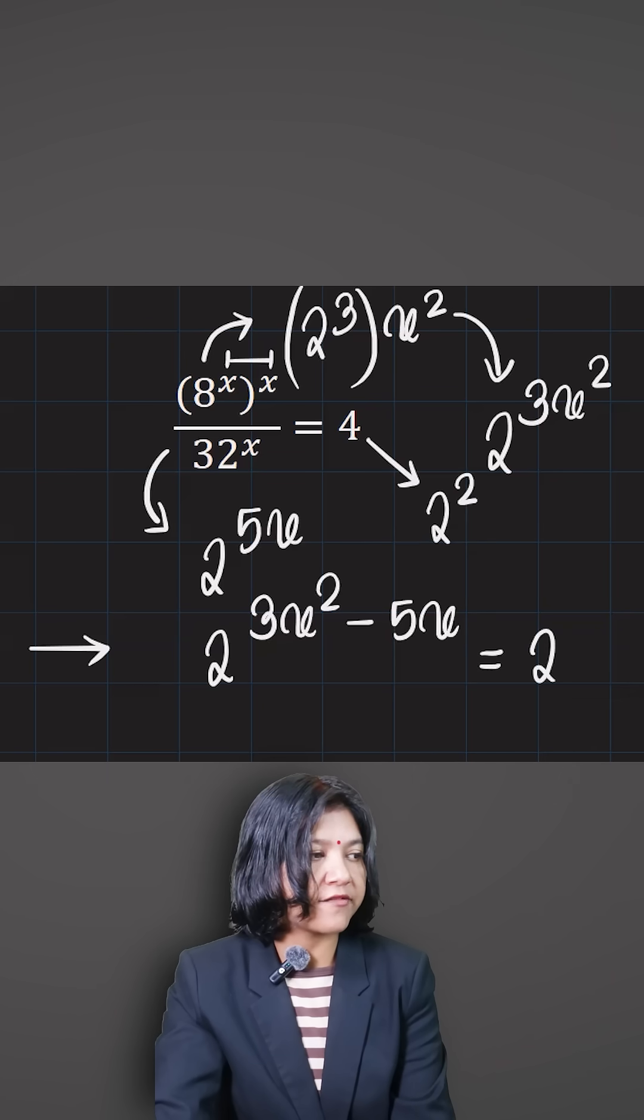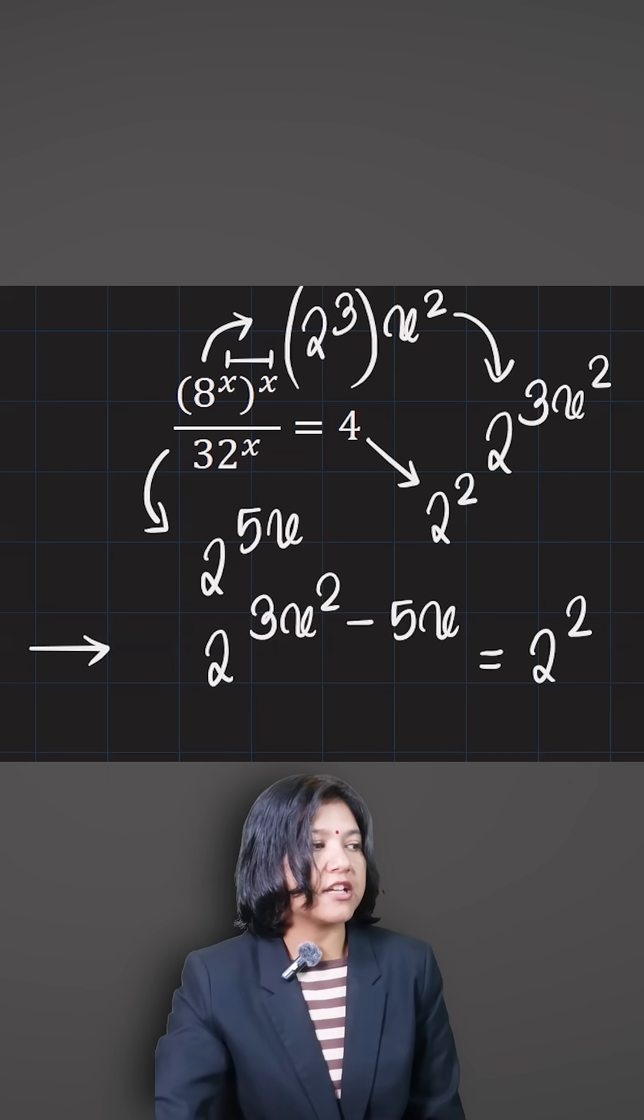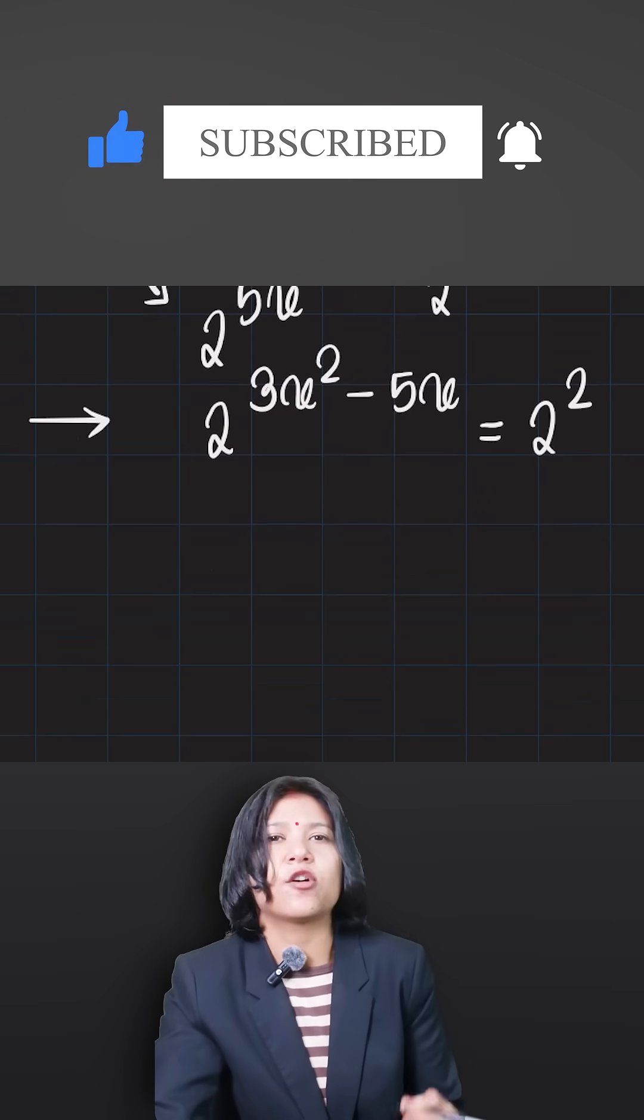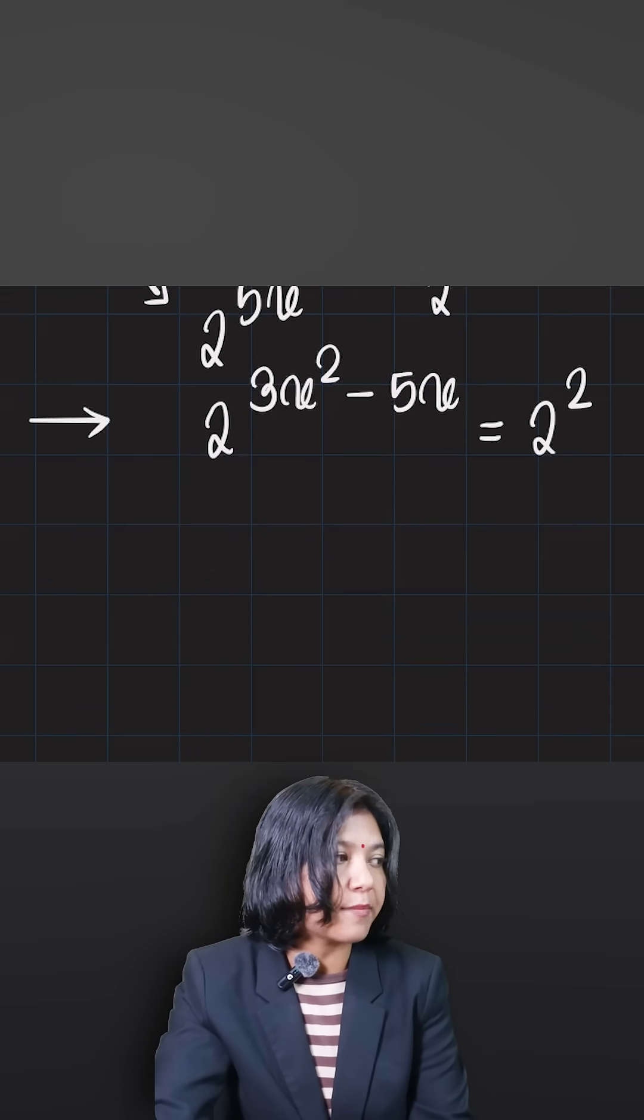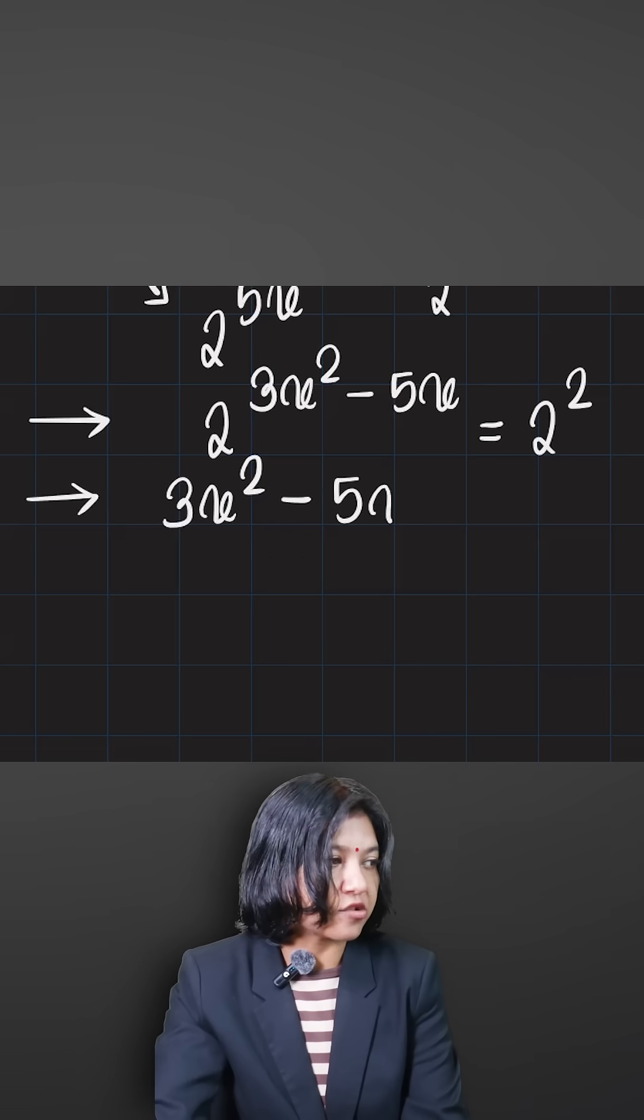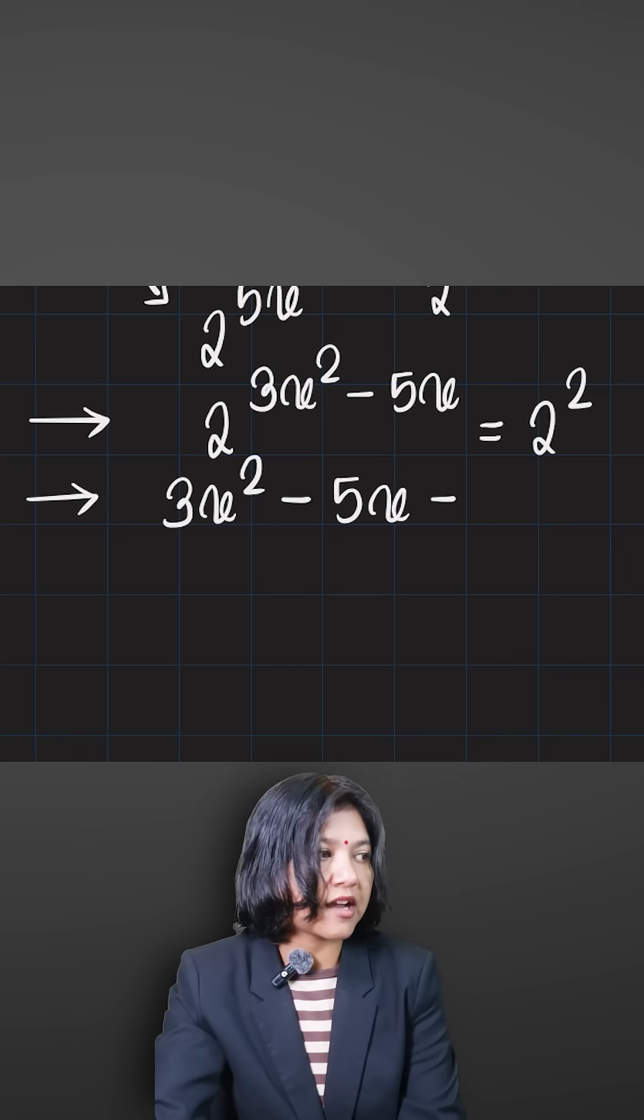I converted my whole equation into powers of 2. All I need to do is compare the powers. Upon comparing the powers, you get a quadratic expression now: 3x squared minus 5x equals 2. Bringing that to this side gives minus 2 equals 0.